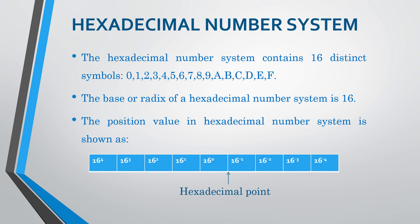Hexadecimal Number System mein 16 symbols hain from 0 to 9 and alphabets A to F. Their numeric values are 10 to 15 — for example, A represents 10 and F represents 15. Here symbols are 16, so base value will be 16. Position value in hexadecimal number system — this is our hexadecimal point.